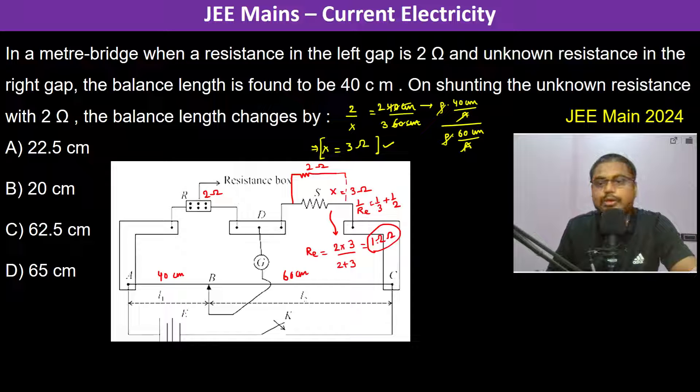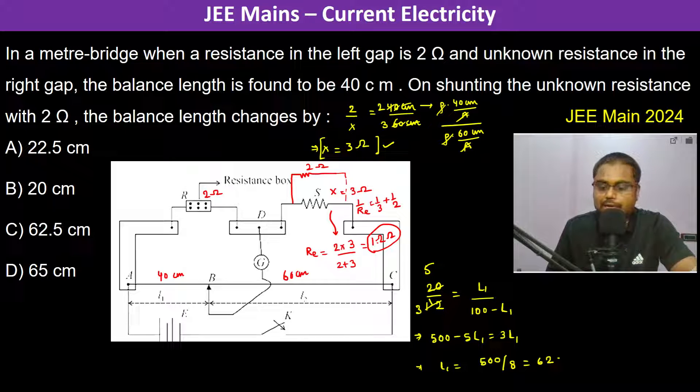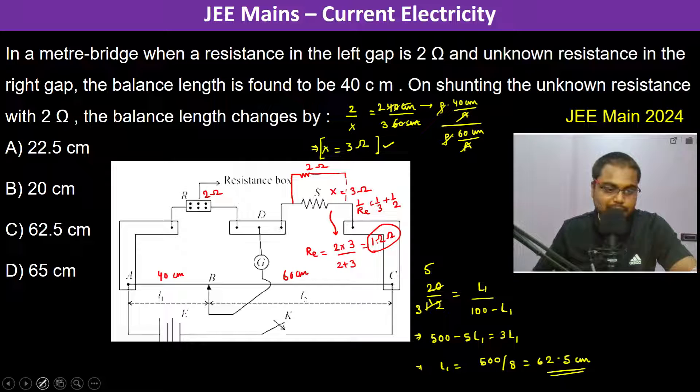Now what's going to be the new balance length? So therefore we can write 2 divided by 1.2 is equal to l1 divided by 100 minus l1. So this becomes 5/3, so 500 minus 5 l1 is equal to 3 l1. So therefore l1 becomes 500 divided by 8, which is 62.5 centimeter. So now this l1 is 62.5 centimeter.